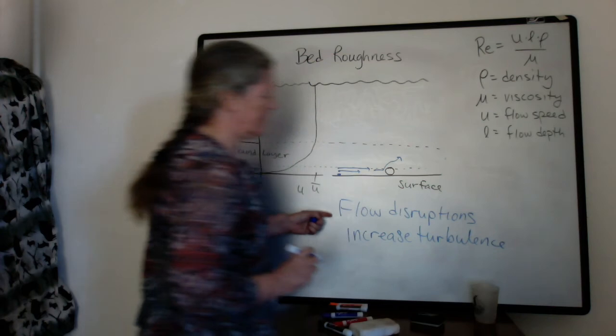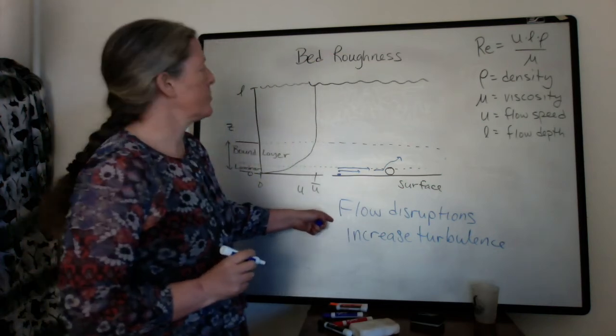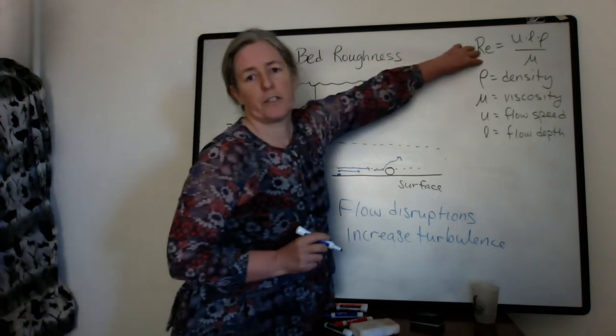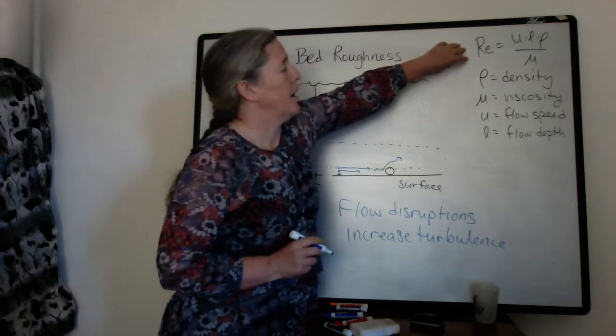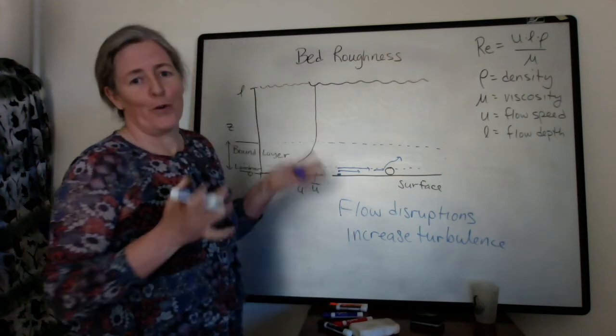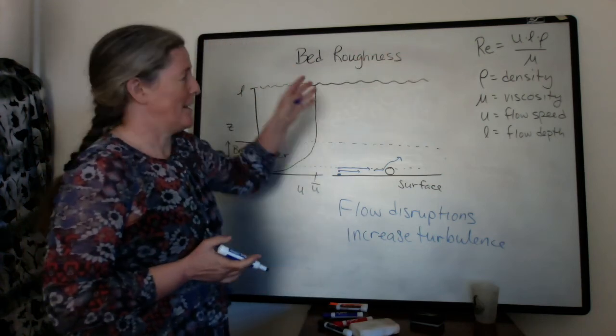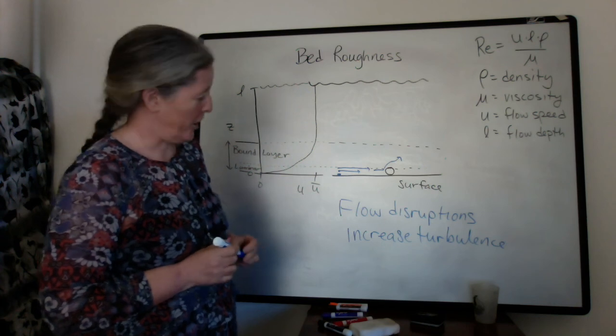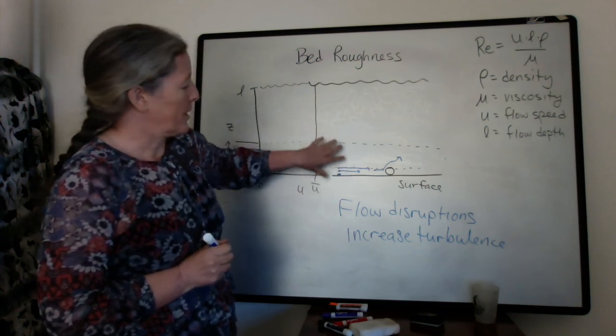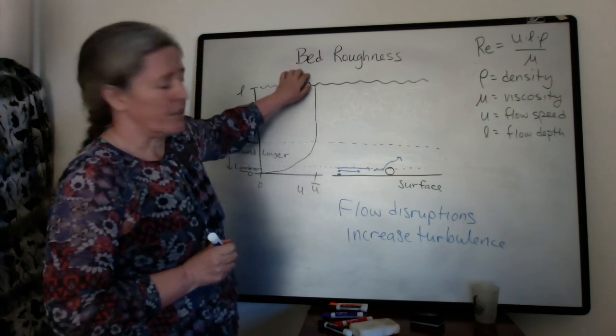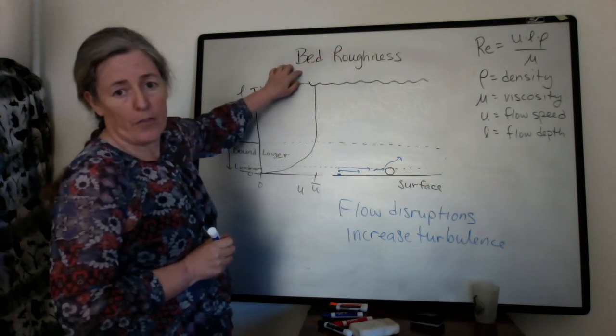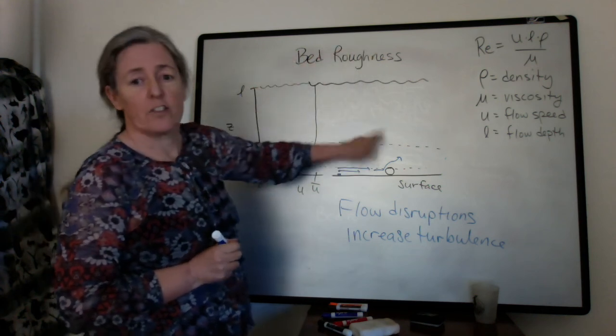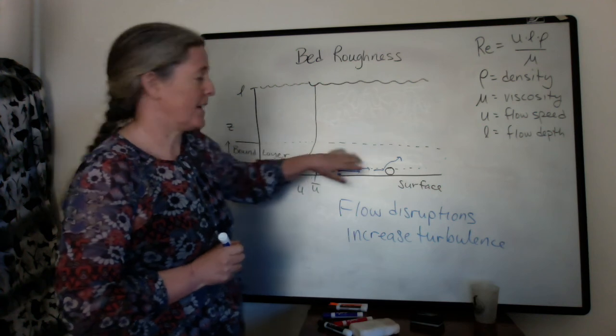And these disruptions to the flow are not captured in our Reynolds number. The Reynolds number is defined for a flow with smooth sides and a very specific geometry, right? And so one of the key things about bed roughness, we can use the Reynolds number as a guide, but if we have a rough bed that's disrupting the flow and creates extra turbulence.